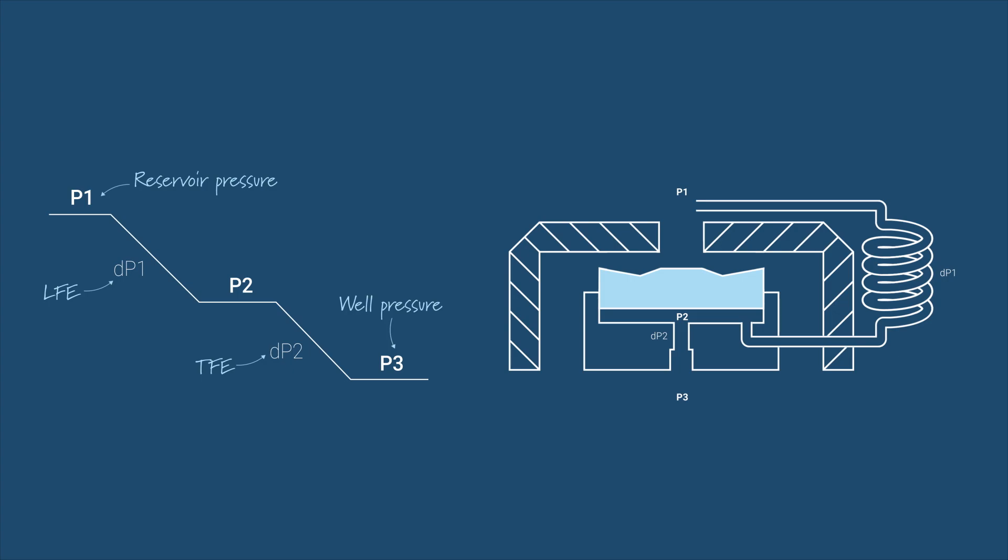Fluid flows will always begin at the same P1 reservoir pressure and end at the same P3 well pressure. But the P2 pressure will vary depending on the LFE and TFE pressure drops. Both of these pressure drops are dictated by the characteristics of the fluids flowing through the AICV.